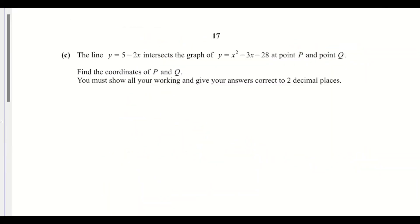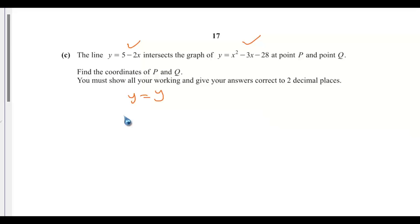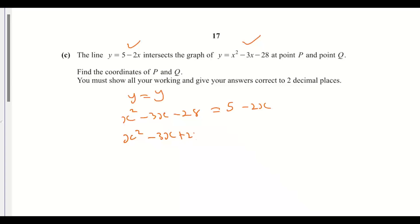The line y equals 5 minus 2x intersects the graph of y equals x squared minus 3x minus 28 at points P and Q. Find the coordinates of P and Q, showing all working and giving answers correct to two decimal places. Setting the two expressions equal: x squared minus 3x minus 28 equals 5 minus 2x.